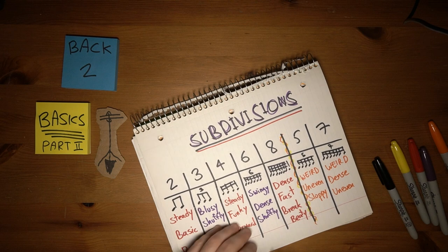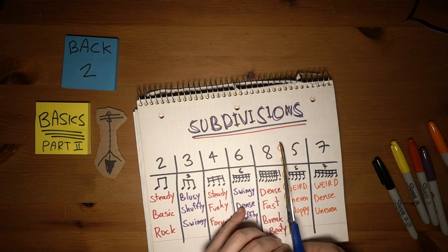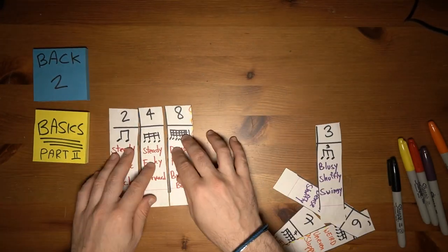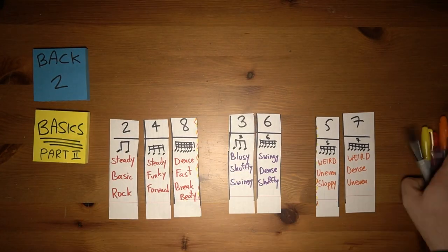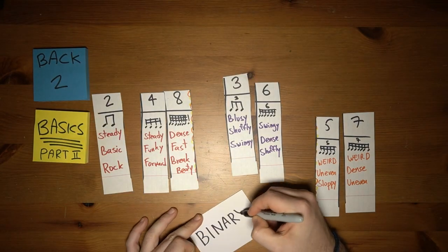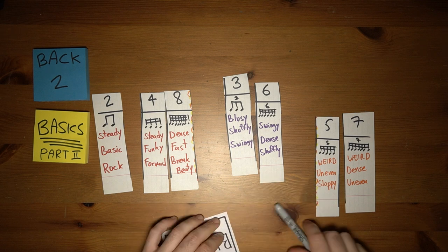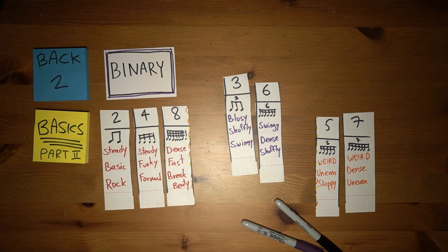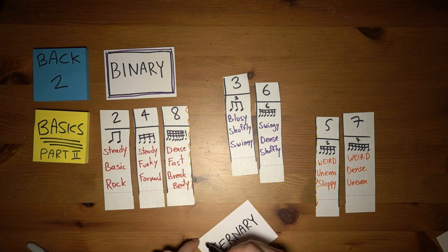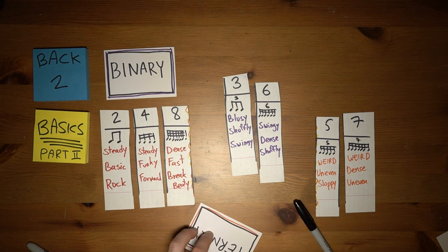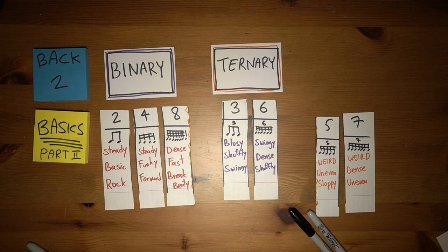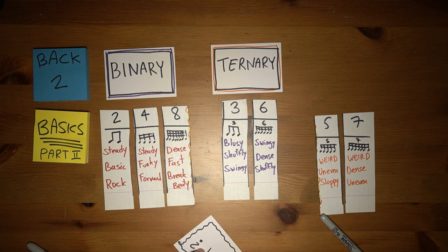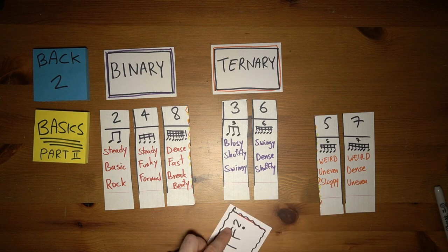Now that we've heard all these examples, I like grouping these subdivisions into more general groups. The binary side, which is 2, 4, and 8. The ternary side, which is 3 and 6. And, of course, the last group — which I'm gonna call the WTF group — that has quintuplets, septuplets, and all the weirdos.